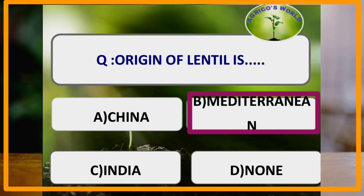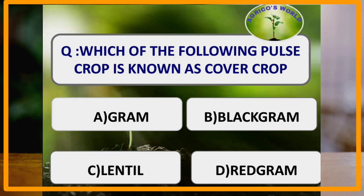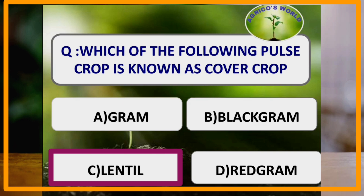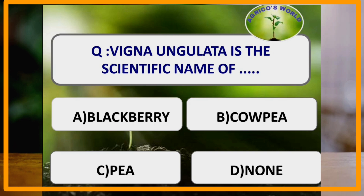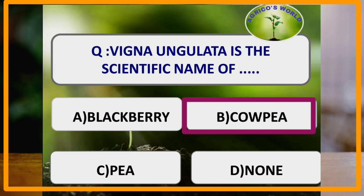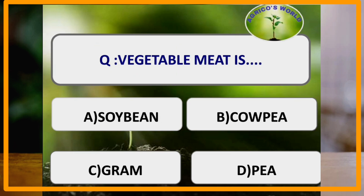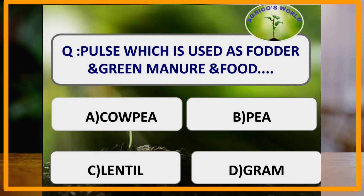Origin of lentil (Lens culinaris) is Mediterranean. Which pulse crop is known as cover crop? Lentil is known as cover crop because it has a smoothing effect. Vigna unguiculata is the scientific name of cowpea. Cowpea is known as vegetable meat, whereas soya bean is known as boneless meat. Cowpea is the pulse used as fodder, green manure, and also food.